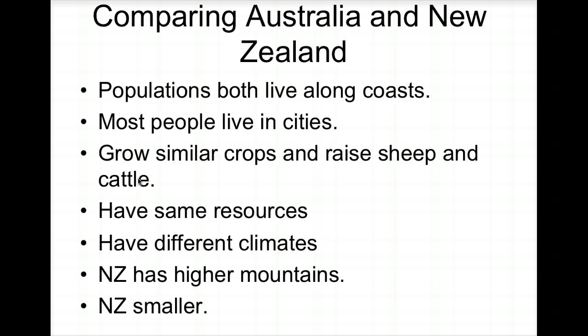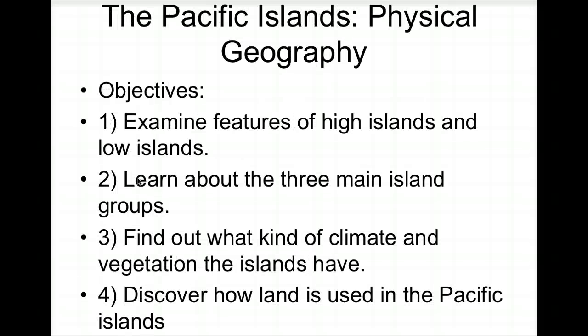Comparing Australia and New Zealand: both populations live along the coast, most people live in cities, they grow similar crops, and raise sheep and cattle with similar resources. However, they have different climates, New Zealand has higher mountains, and New Zealand is significantly smaller.